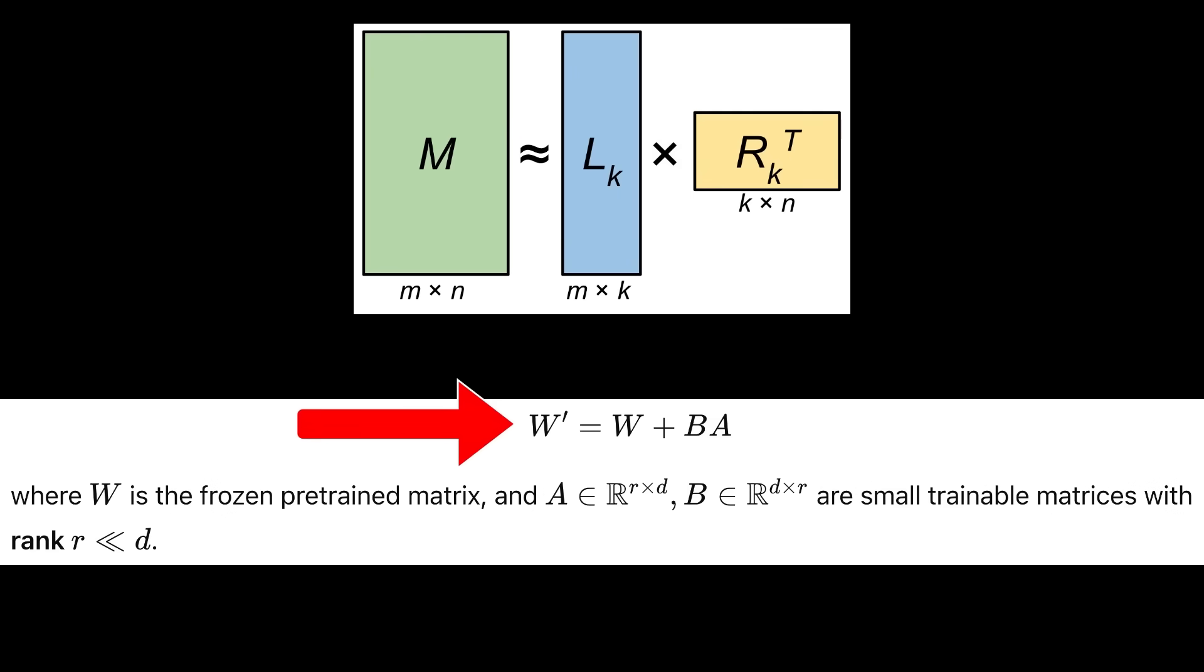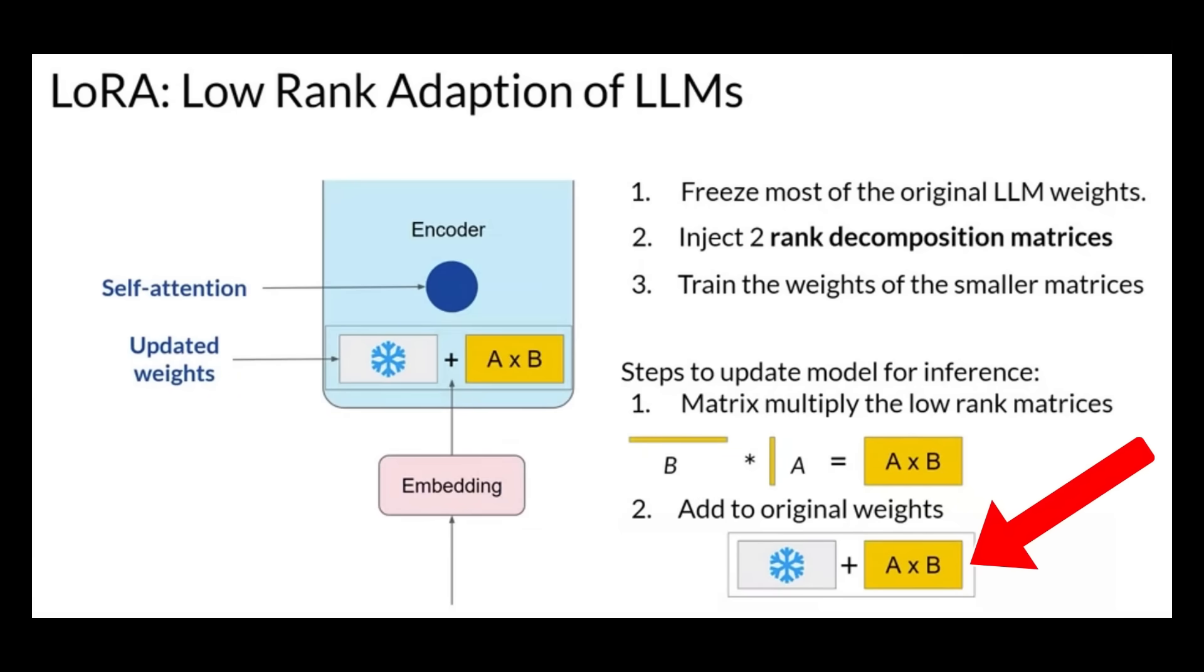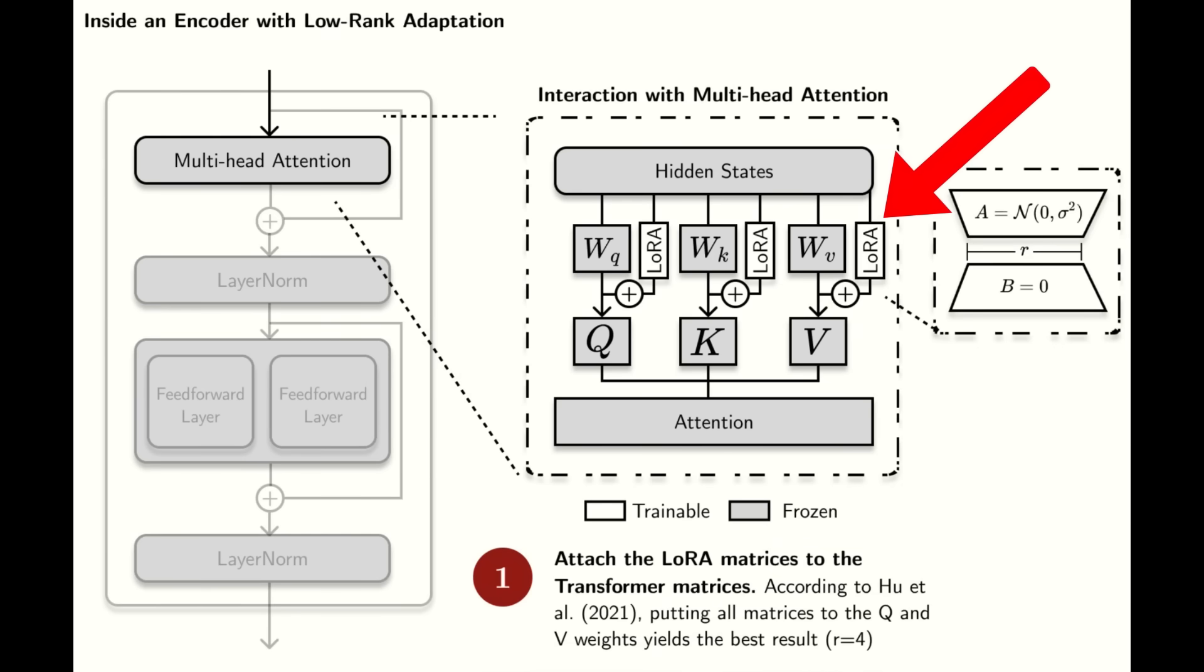Here's the math. W prime equals W plus BA, where W is the frozen pre-trained matrix, A is an element of the reals with dimensionality of R times D, B is an element of the reals with dimensionality of D times R, and A and B are small trainable matrices with rank of R much smaller than rank of D, and D is the rank of the original matrix. During training, only A and B are updated, and it dramatically reduces parameter count, often by 100 times. LoRa can fine-tune a 7 billion parameter model on a single high-end GPU.